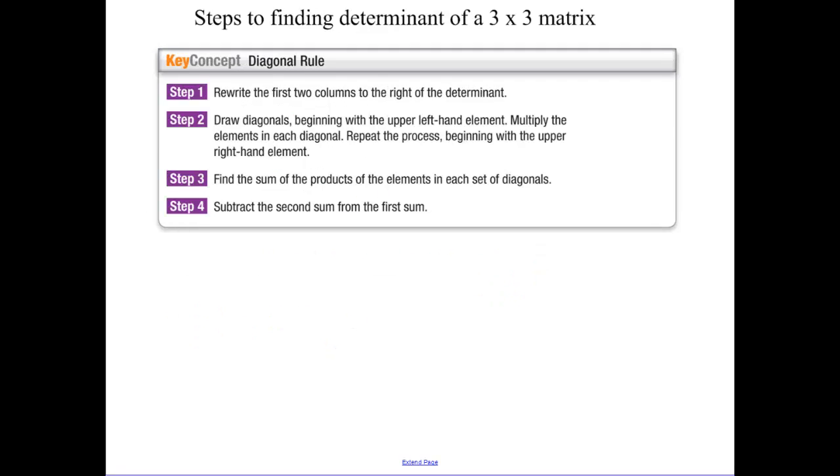Now for a 3 by 3 matrix, write down these steps: rewrite the first two columns to the right of the determinant, draw the diagonals beginning with the upper left hand or main diagonal, and multiply each element in the diagonal.